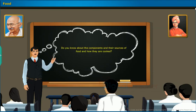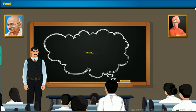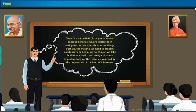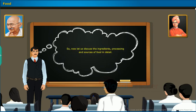Do you know about the components and their sources of food and how they are cooked? It may be difficult to answer because generally we are more interested in eating food rather than knowing about the materials needed to prepare potato curry or brinjal curry. Though we take food for our health and energy, it is also important to know the materials required for its preparation. Now let us discuss the ingredients, processing and sources of food in detail.